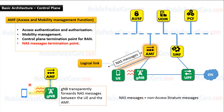This means that the AMF has no direct link to the UE. Instead, the AMF sends and receives NAS messages to and from the UE through the gNodeB. The gNodeB transparently forwards the NAS messages between the UE and the AMF.